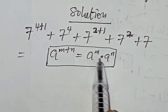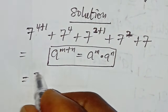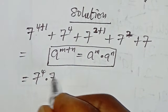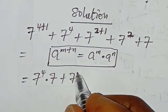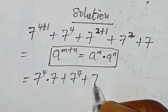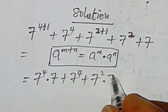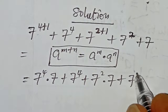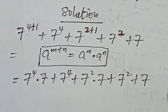Applying this identity, we get: seven to the power of four multiplied by seven, plus seven to the power of four, plus seven to the power of two multiplied by seven, plus seven to the power of two, plus seven.